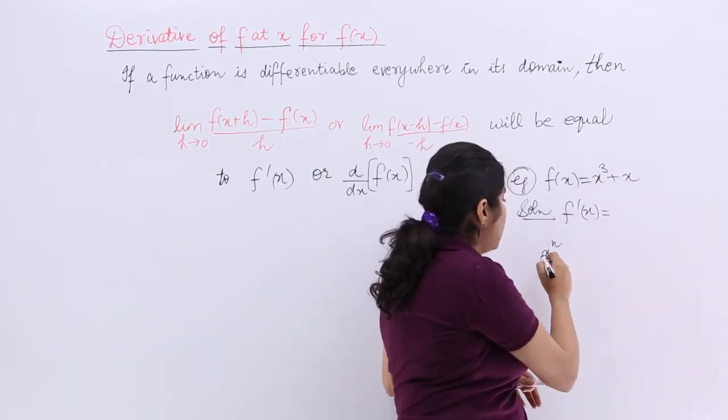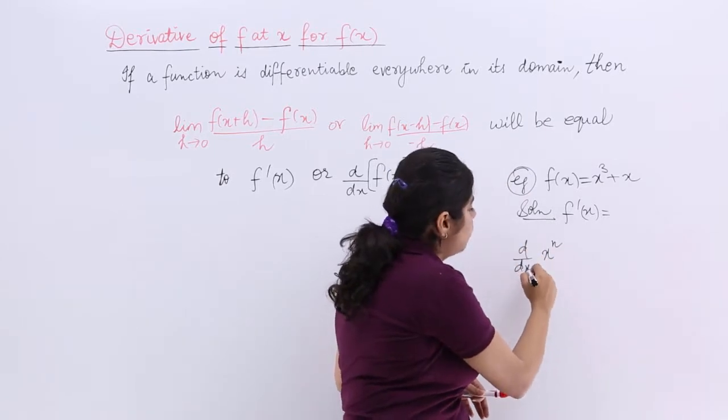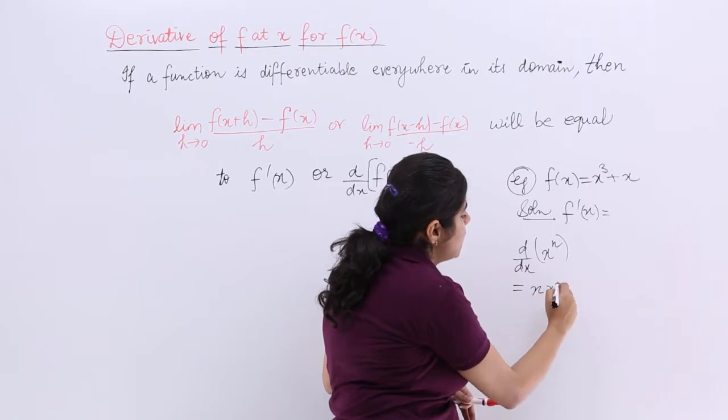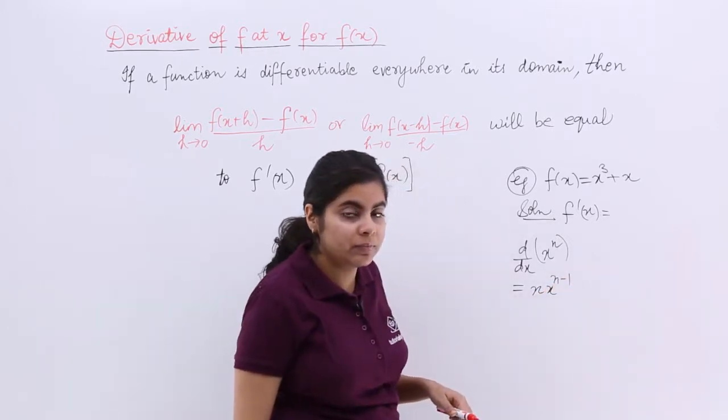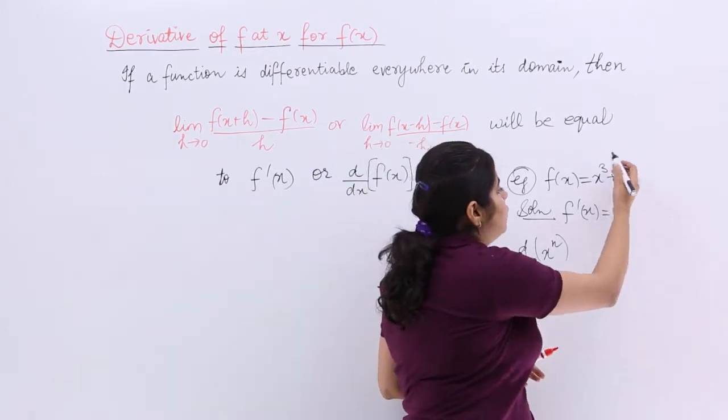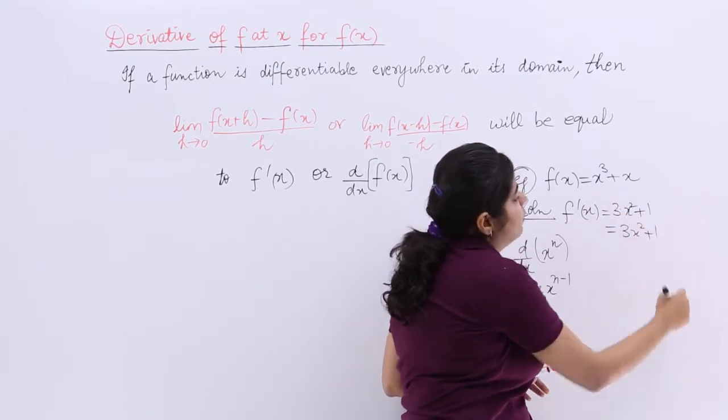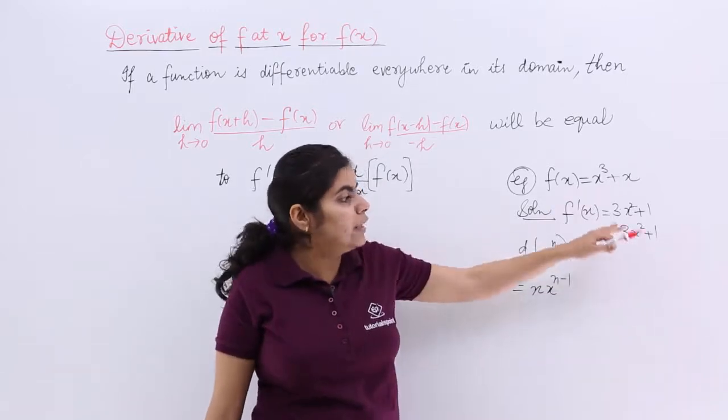So f dash x would be what? You can always use the formula for x^n. d by dx of x^n is a formula that we studied in our junior class: nx raised to the power n minus 1. So the answer would be 3x square plus 1. Right? This we already did.